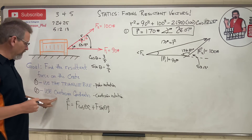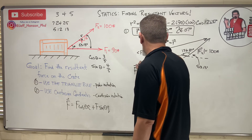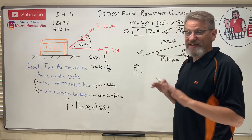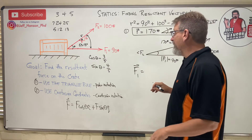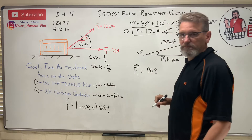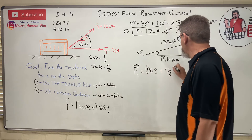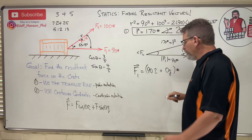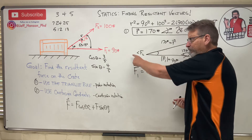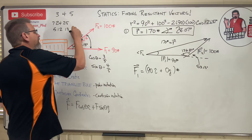Now let's write F1 and F2 in Cartesian form. Vector F1 is completely in the x-direction — it has no y-component. So F1 = 90î + 0ĵ pounds. We don't need to break it into components since it only has one component.